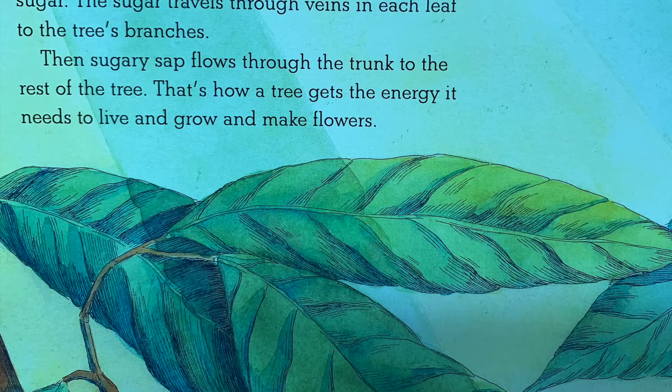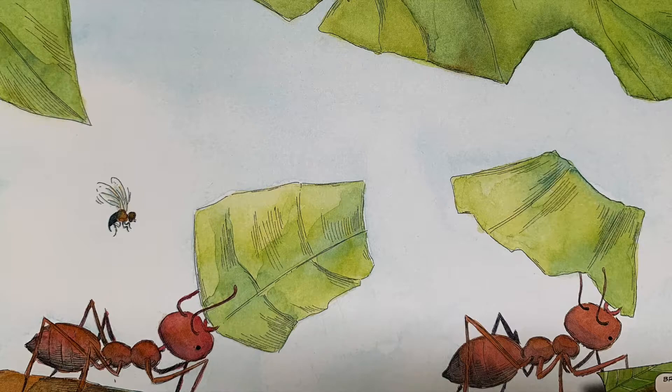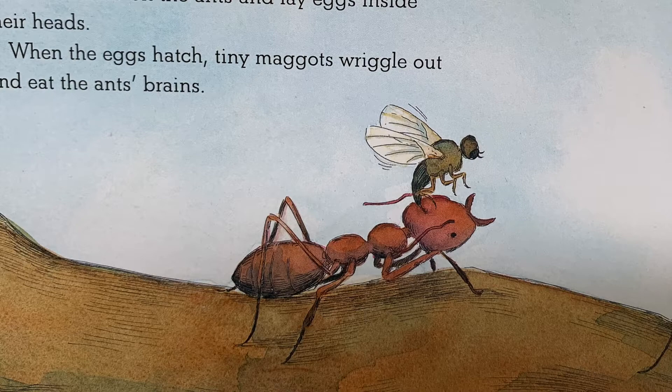And maggots. As soon as leafcutter ants spot tender new leaves on a cocoa tree, the little insects race to reach them. While the hard-working ants slice up the leaves and carry the pieces back to their nest, female coffin flies land on the ants and lay eggs inside their heads. When the eggs hatch, tiny maggots wriggle out and eat the ants' brains.